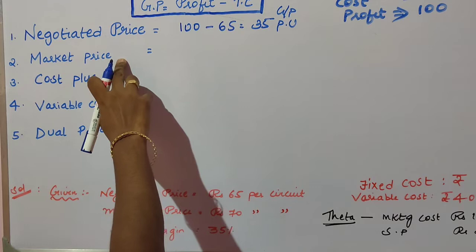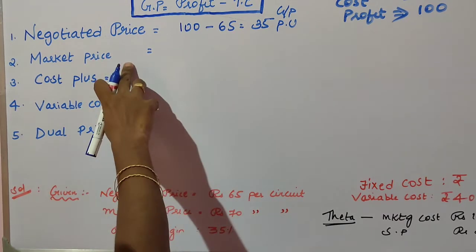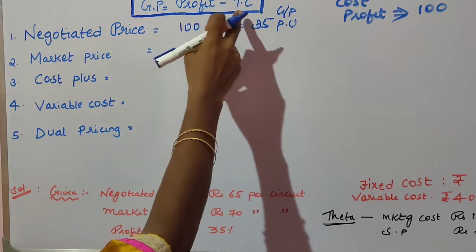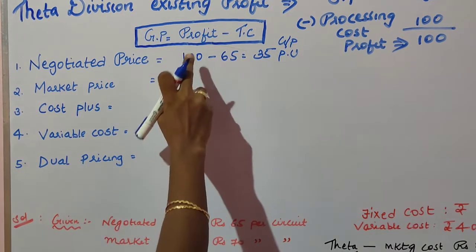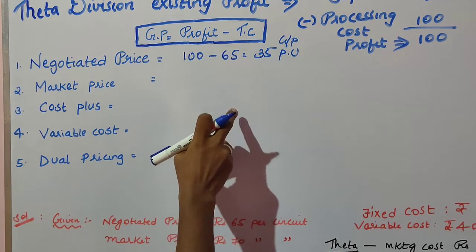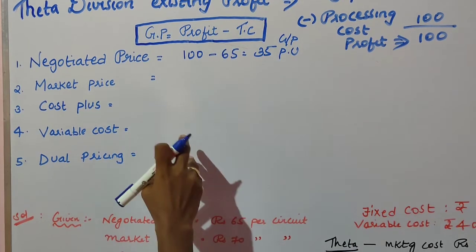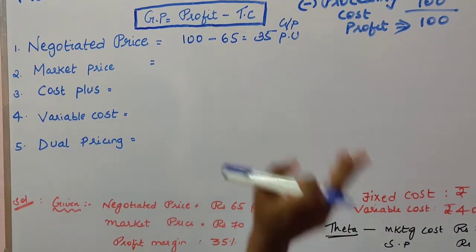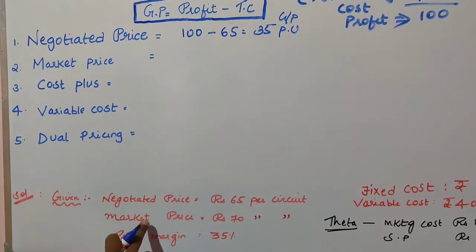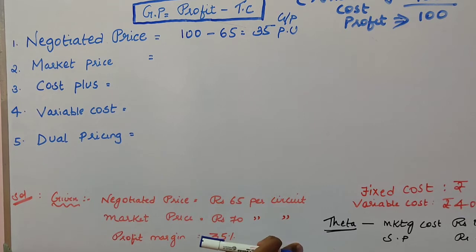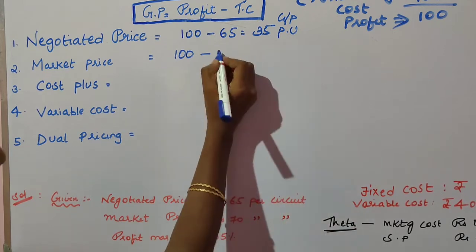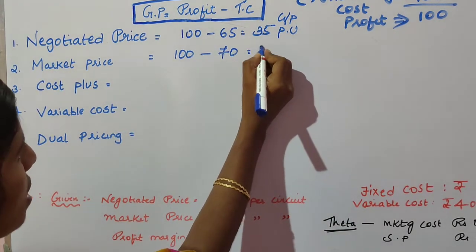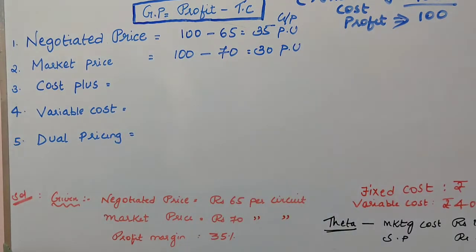Coming to the second method — market price. Under market price, the price prevailing in the market is treated as the transfer cost. In the question, market price is given as Rs 70 per circuit. So profit (100) minus market price (70) equals 30 per unit gross profit under the market price transfer pricing method.